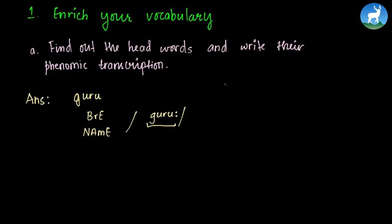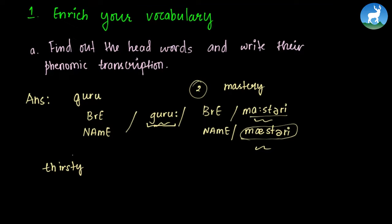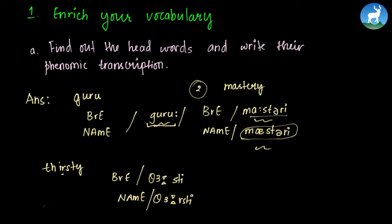The next headword is 'mastery'. The phonemic transcription for the British pronunciation is shown, and for the American pronunciation it differs slightly. For 'thirsty', we can see that R is silent in British pronunciation — that's why we say 'thirsty' in British English — whereas in American pronunciation the R is present, giving us 'thirsty'. Phonemic transcription basically teaches us how to pronounce a word.